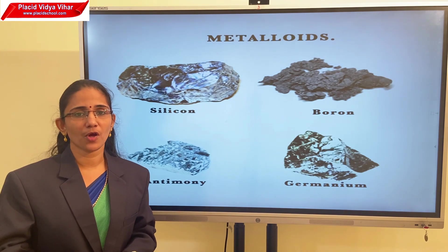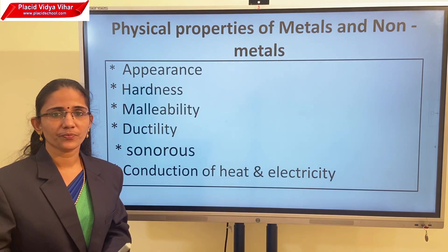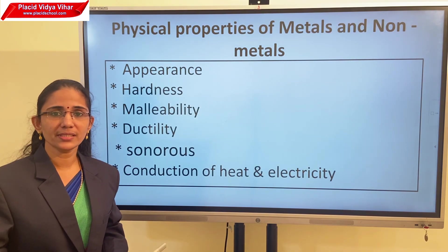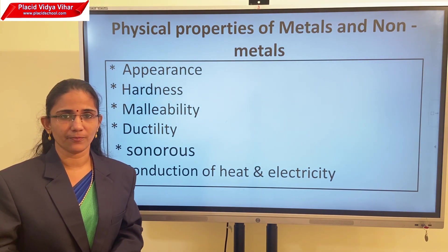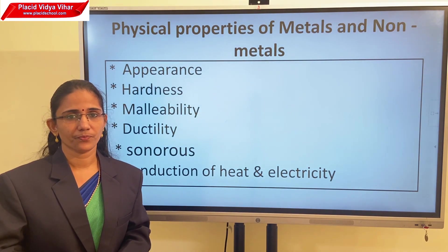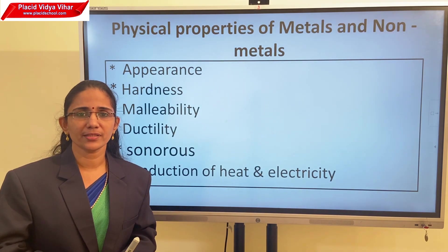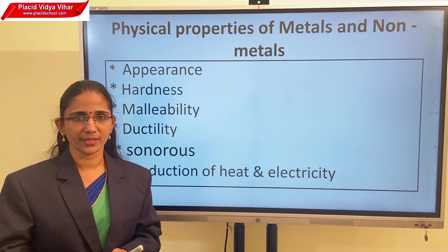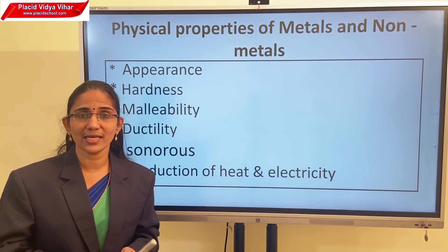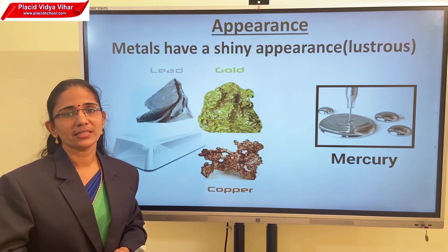Next we will see the physical properties of metals and non-metals. In physical properties, we mainly discuss appearance, hardness, malleability, ductility, sonorous, and conduction of heat and electricity. Regarding appearance: if you observe your gold ornaments, you will see they have a shiny appearance. Most of the metals are lustrous — even the liquid metal mercury has a shiny appearance.